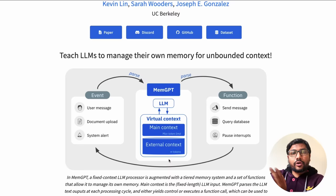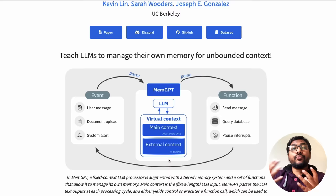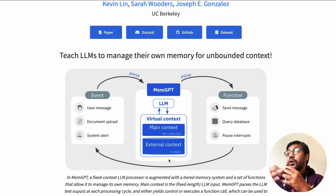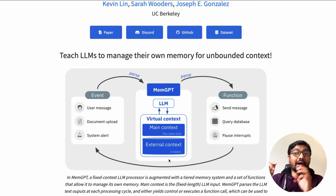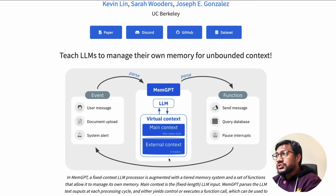MemGPT uses FAISS — an open-source vector database solution — but what they're trying to do with it is improve operations seamlessly, letting the LLM manage its own memory. They've created a virtual context with a main context and an external context. The main context is analogous to RAM — the primary memory — with a limited window of, say, 4,000–8,000 tokens. The external context is analogous to external disk storage, offering effectively unlimited memory.